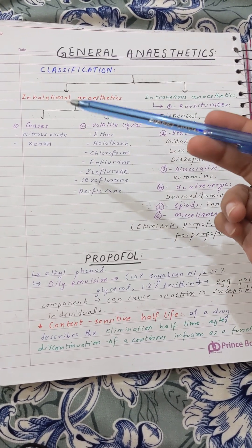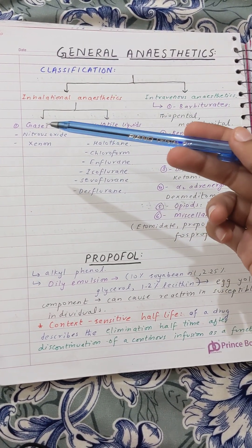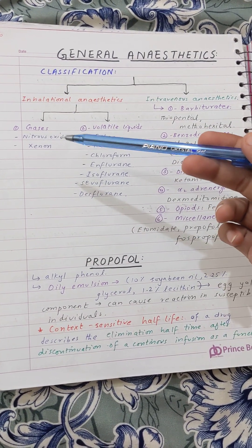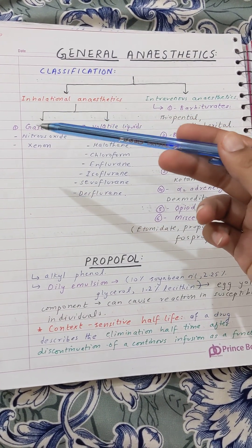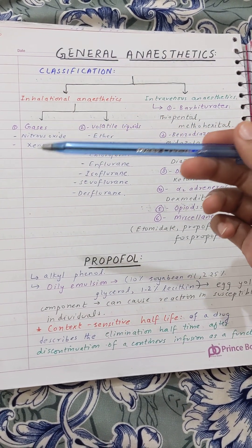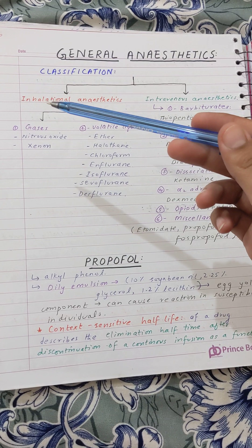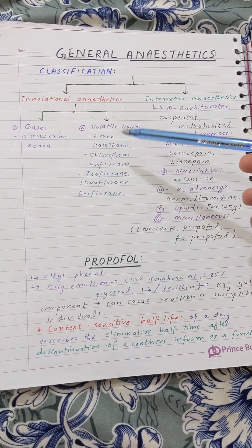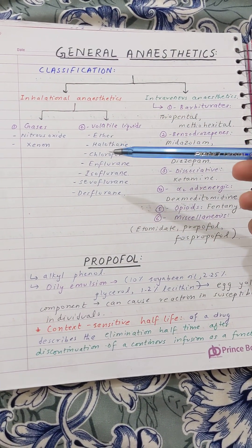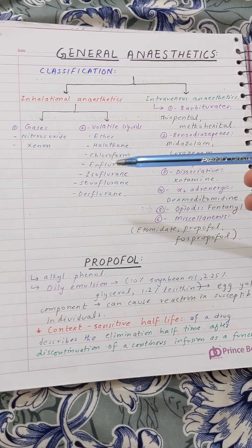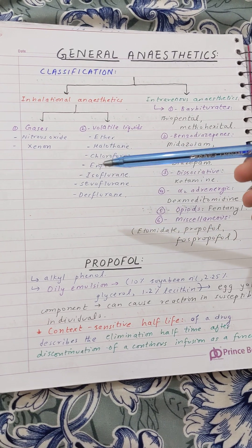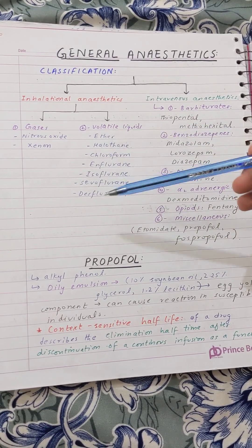For inhalational anesthetics given from inhalational routes, we have nitrous oxide and xenon — we use these more as gases. So nitrous oxide and xenon are the gas components of inhalational anesthetics, and then there are volatile liquids which we also use in inhalational anesthetics.